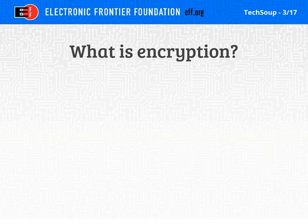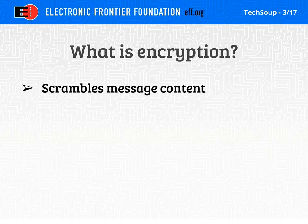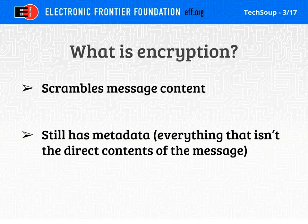With the help of encryption, we can actually make this connection much more secure, and people can actually be ensured that the communications they are sending are not interceptable and not readable. What is encryption? Encryption scrambles the message content so that it is not readable from anyone sitting on the network in the middle of Alice and Bob. It also, to note, still has metadata — that is everything that isn't the direct contents of that message.